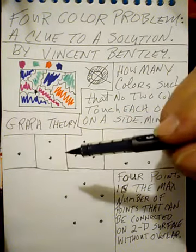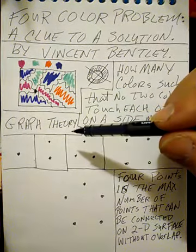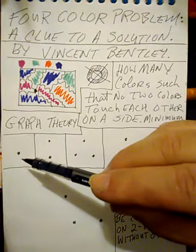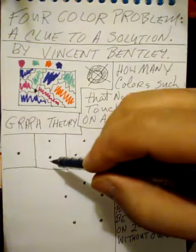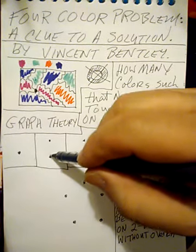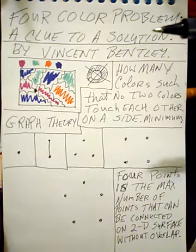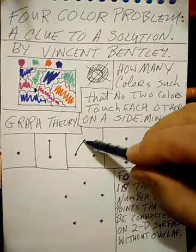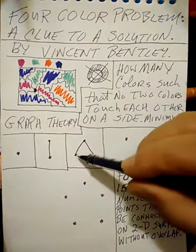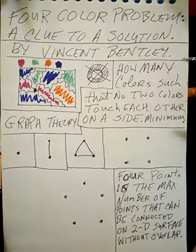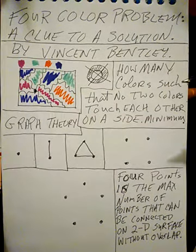What I propose to solve this problem is something called graph theory. And what we'll have here is we have one point here. Here we have two points, and if we try to find out the maximum number of connections between them, there is just one connection. Here we have three points, and we'll connect all the dots together so that each dot is connected to every other dot in the picture.